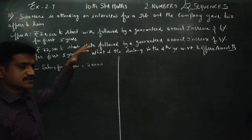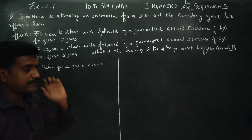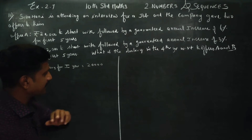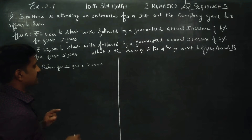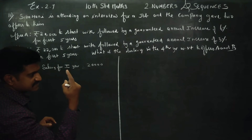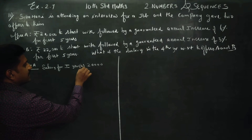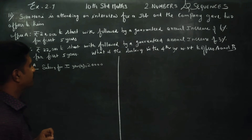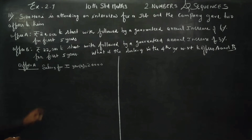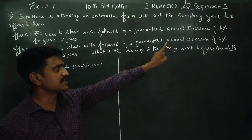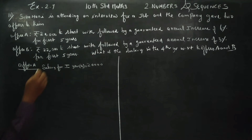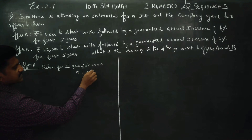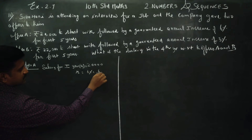The starting salary is the first term, let's call it 'a'. The salary for the first year is 'a'. The increment percentage is 6%. The increment is 6%, and the rate of increment R is 6% or 6 by 100.